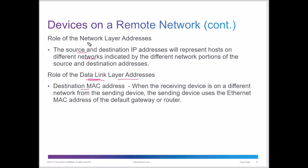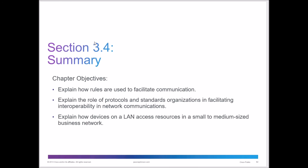This concludes chapter 3, part 2 of 2. In summary, across both videos we looked at how rules facilitate communication, how protocols and governing bodies work, the roles of protocols, how devices on a local area network access resources, and which layer — data link or network — is used depending on whether it's a local or remote network. If this was helpful, click like, subscribe for updates, and leave a comment if you have any questions. Thank you for watching.